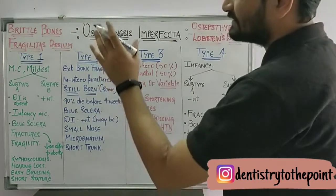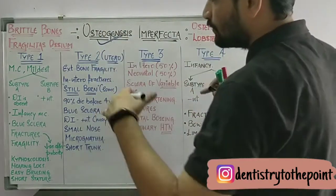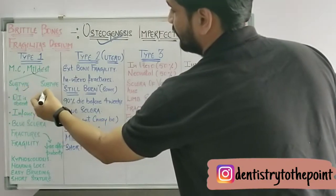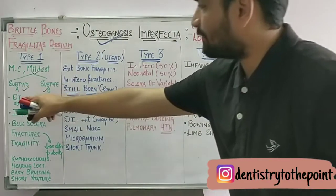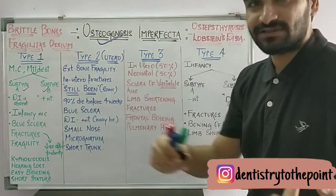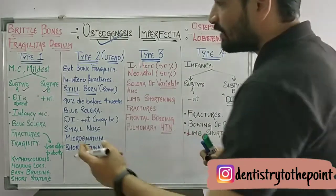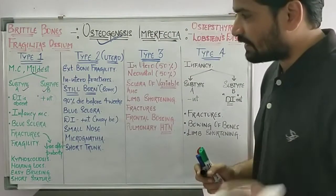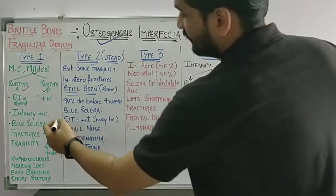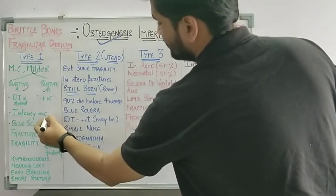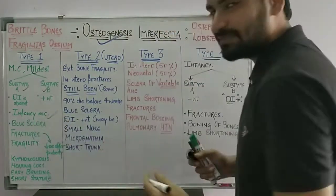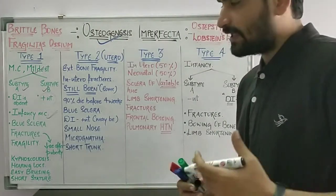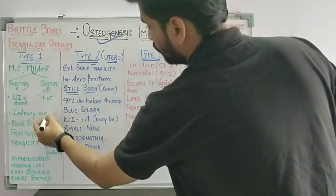Type 1 has two subtypes: subtype A and subtype B. Subtype A does not have dentinogenesis imperfecta, while subtype B will have dentinogenesis imperfecta. Type 1 is most commonly seen in infancy, though some cases are also seen in the neonatal age group or in utero.